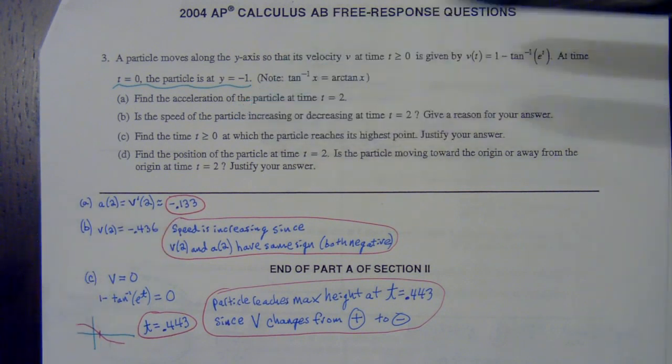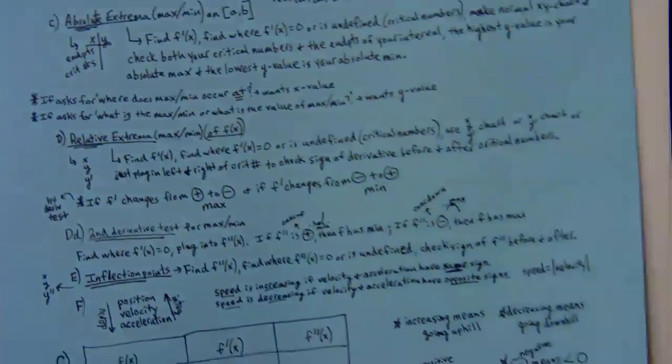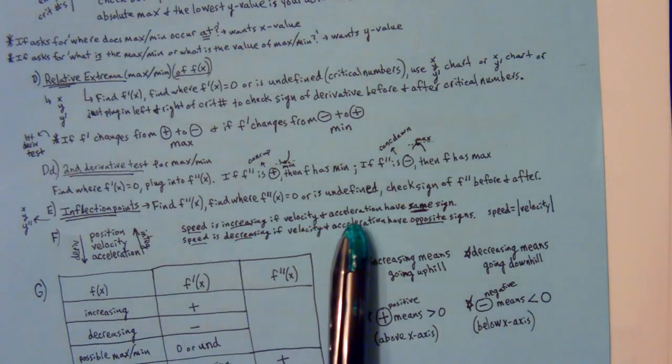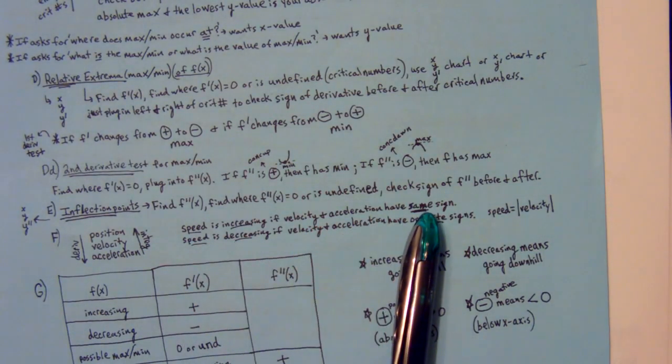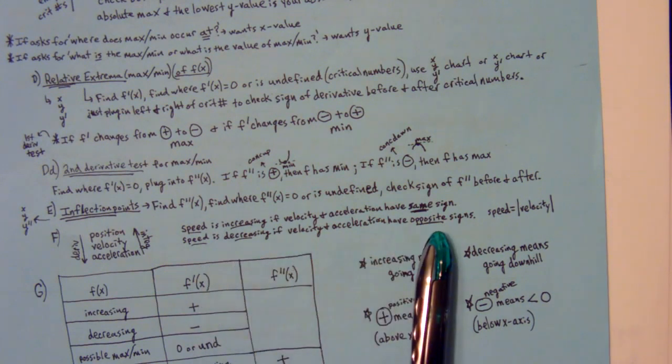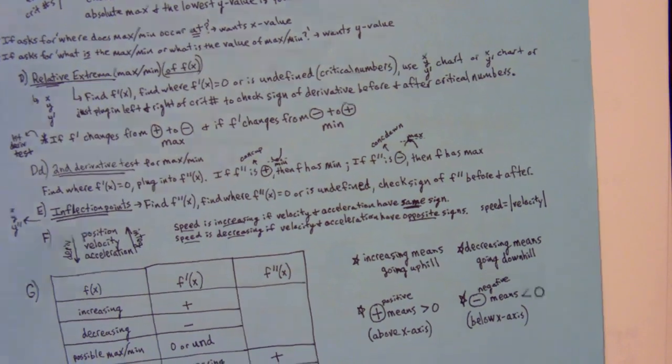Part B says, is the speed of the particle increasing or decreasing at time t equals two? We've seen this at least once already, possibly twice, but it's on your blue sheet. Speed is increasing when velocity and acceleration have the same sign, either both positive or both negative. Speed is decreasing when velocity and acceleration have opposite signs, one's positive and one's negative.